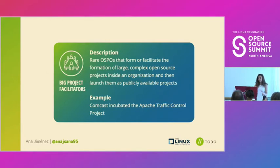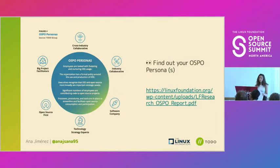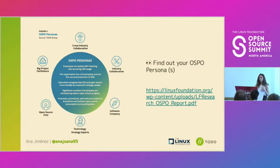Another common example is the OSPO that facilitates the incubation of open source projects within the organization and then launches them — for instance, Comcast incubated the Apache Traffic Control project. There are several archetypes; you can try to find your OSPO personas using the deep report linked for a deeper dive. These archetypes are currently corporate-focused, but they're not a closed list — it can grow wider, and other organizations can add value by finding other patterns and adding more archetypes.